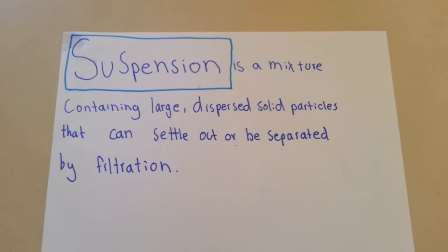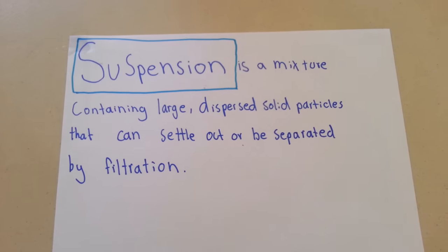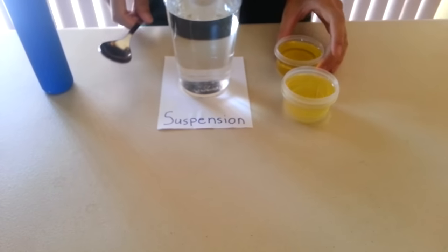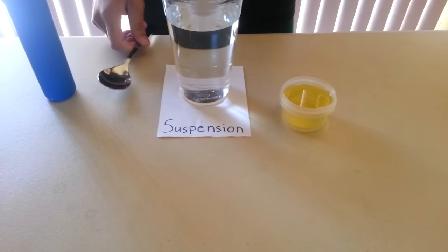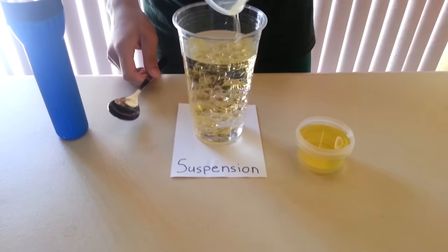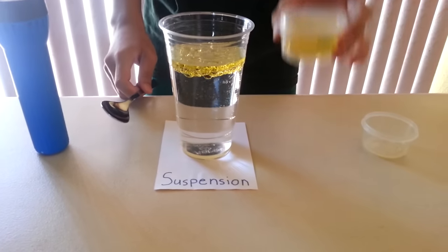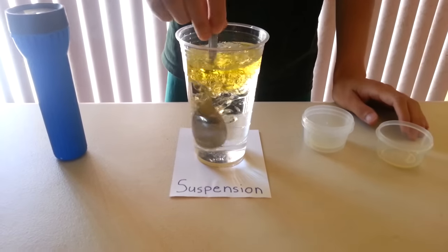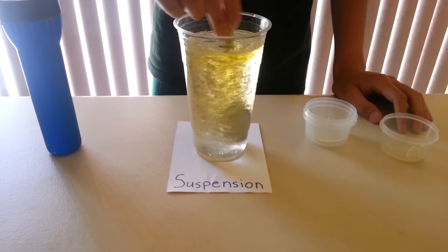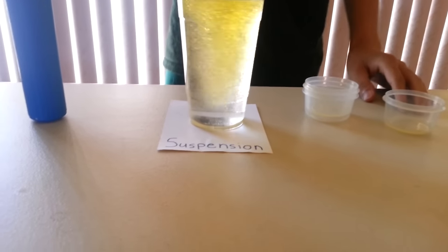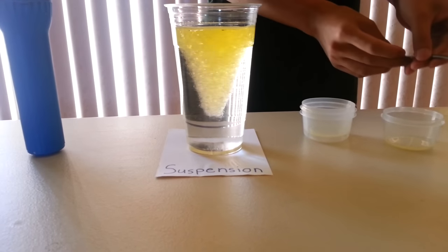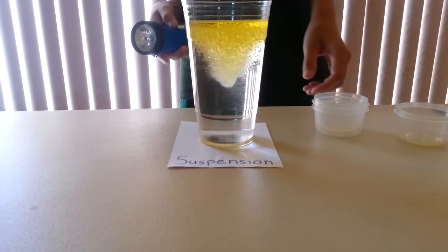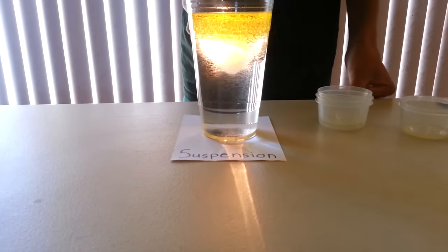A suspension is a mixture containing large dispersed solid particles that can settle out or be separated by filtration. An example of suspension would be mixing oil and water. For suspension, the particles easily separate and light can easily pass through.